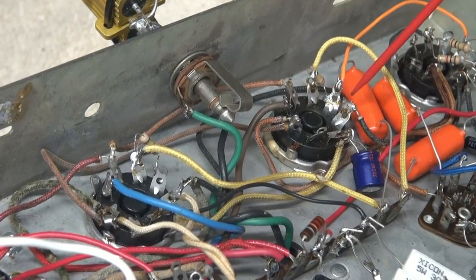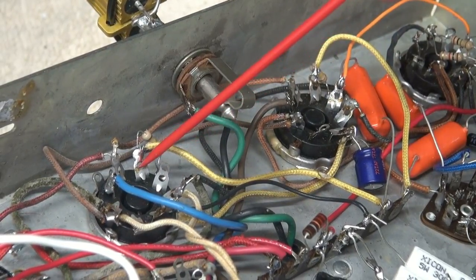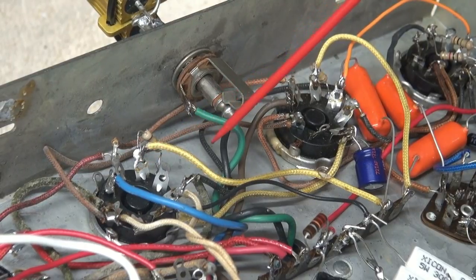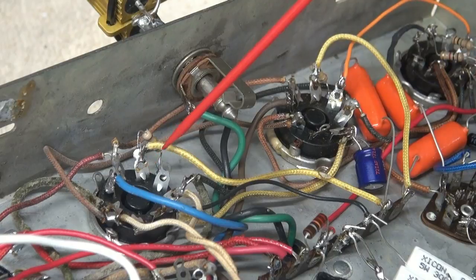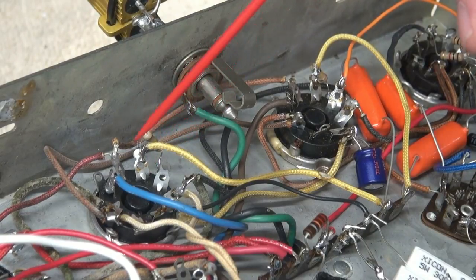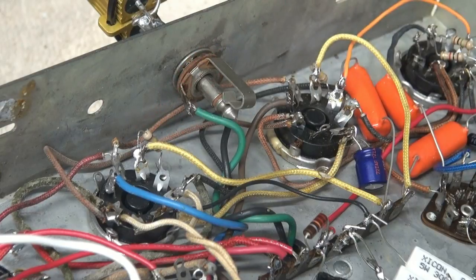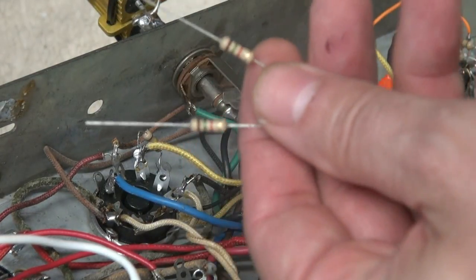So here's the 6V6s, okay. Pin 6 normally is not used. Pin 5 is your input on each tube. So we're going to put the grid stop resistors between 6 and 5 and I'm going to move this input wire over to 6 so it has to travel through the grid resistors and hit pin 5, and I'm going to use 1.5K resistors just like Fender did.